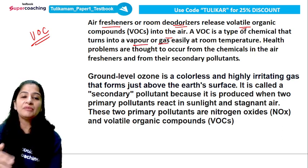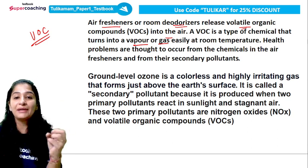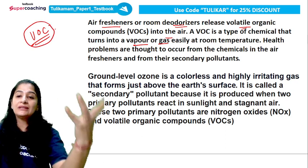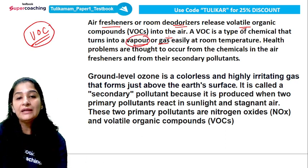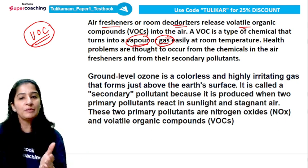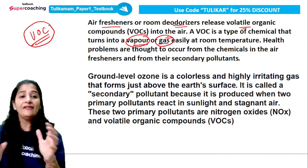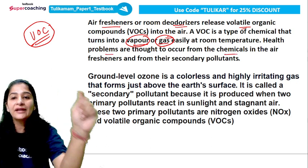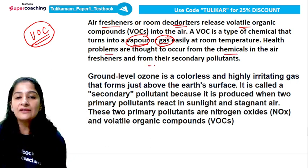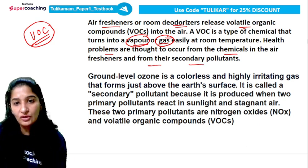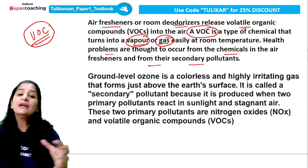Air fresheners and room deodorizers release very small, often invisible quantities of Volatile Organic Compounds into the air. VOC is a type of chemical that converts into vapor or gas — meaning when you spray something, you immediately smell it but cannot see anything, because VOC instantly converts to vapor or gas at normal room temperature. Many present-day health problems are caused because of this chemical being added to the air, and we also call it a secondary pollutant. VOC is a secondary pollutant, formed by combining with primary pollutants.